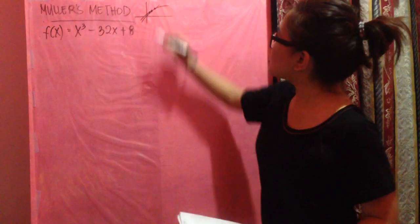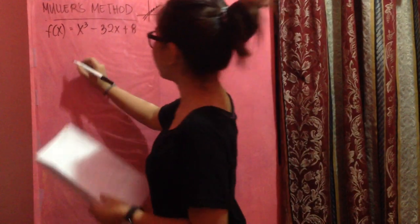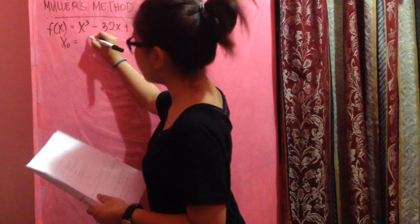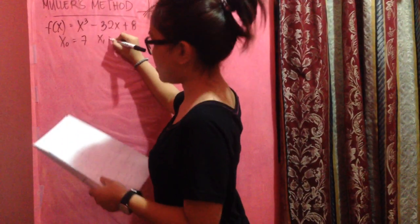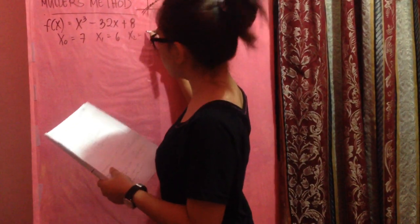Since it's Müller's, we have to guess 3 points. For x₀, we have 7, x₁ we have 6, and x₂ we have 1.